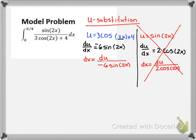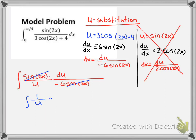Now let's write our integral down. Integral of sine of 2x, dx we're going to replace with du over negative 6 sine of 2x. And in this case, our u is in the denominator. And sure enough, sine of 2x is found in both the numerator and the denominator.